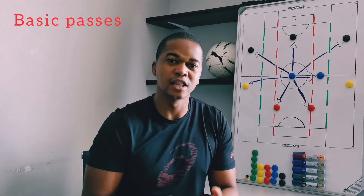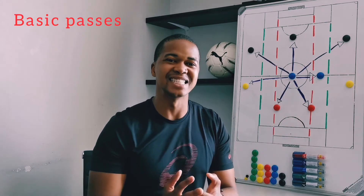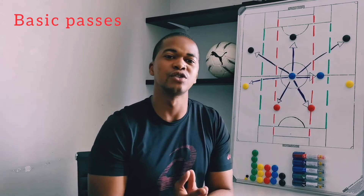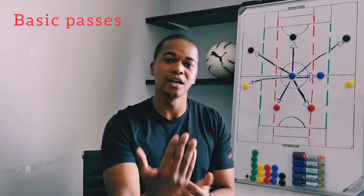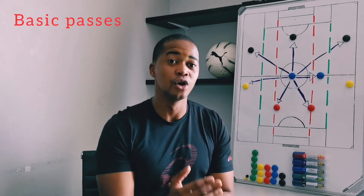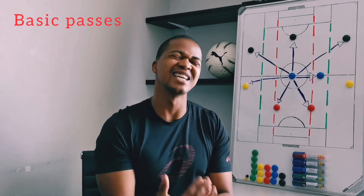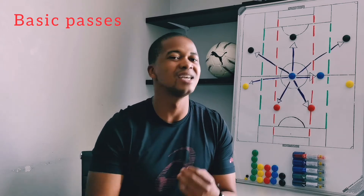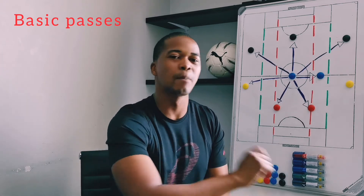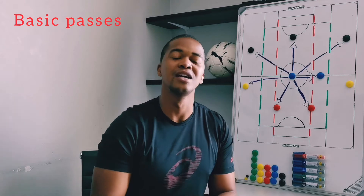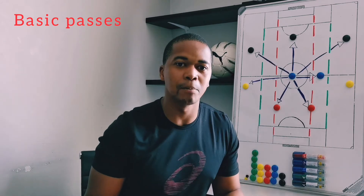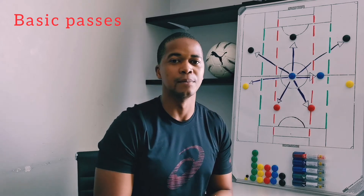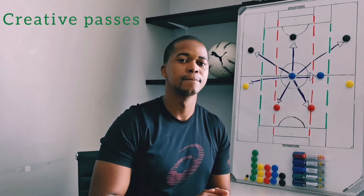More than anyone else on the field, the central midfielder should know where people are all around them. How is everyone a basic pass option? It depends on their positioning, their body shape, and how easy it would be to get the ball to them. Generally for a central midfielder, you play where you are facing — so whoever you are looking at and facing, if they are open and an easy option, that is your basic pass option.